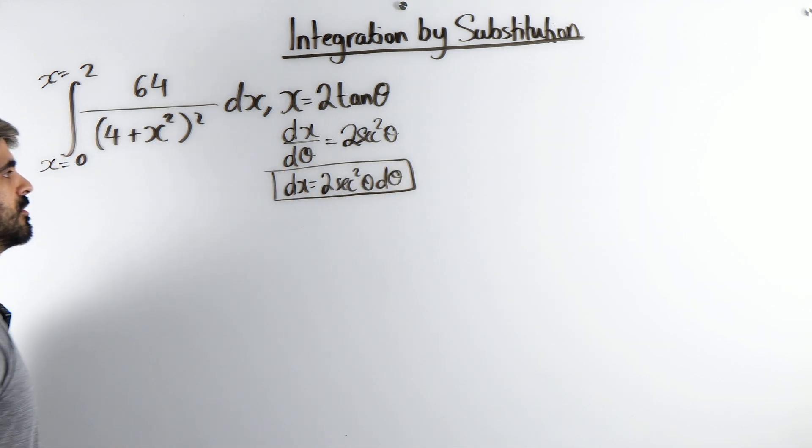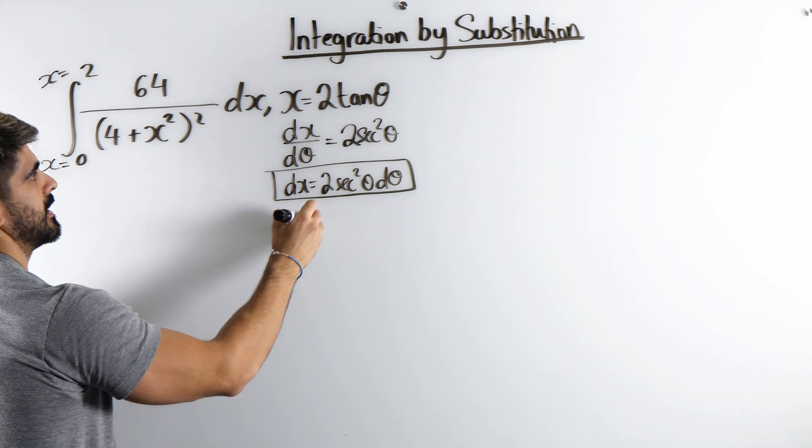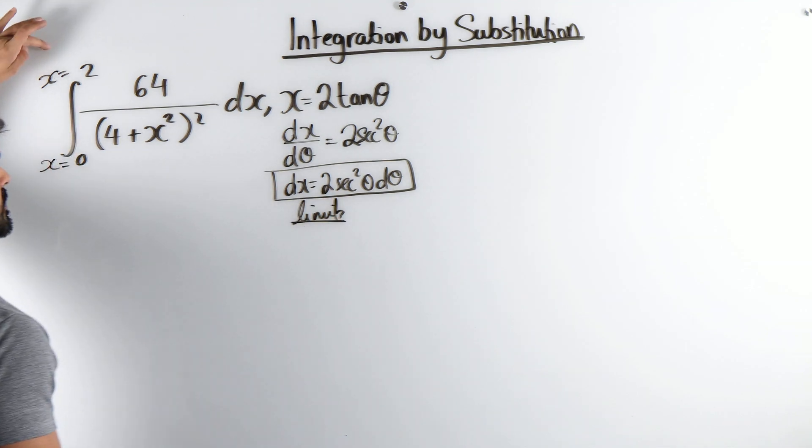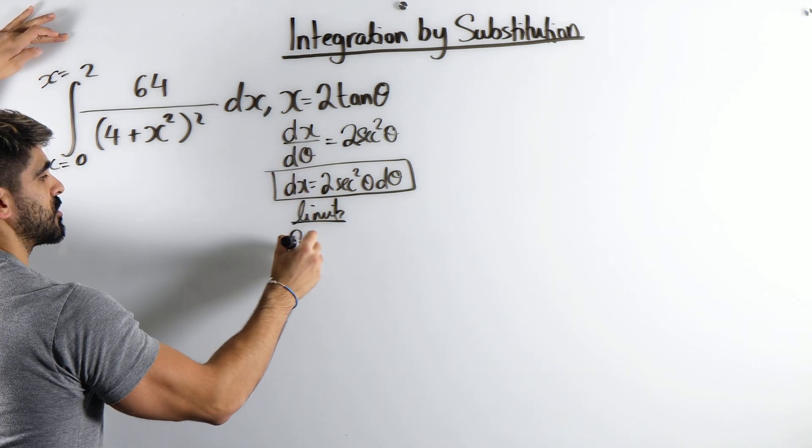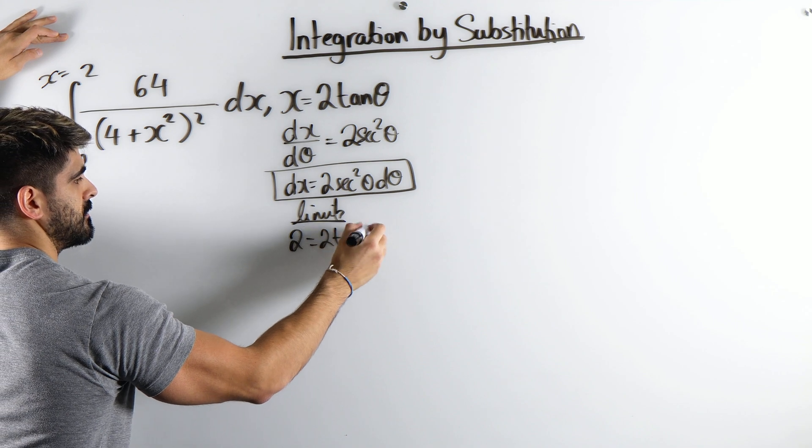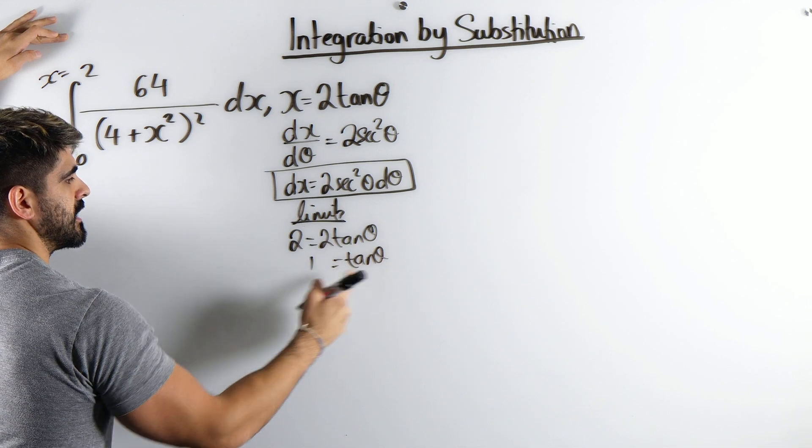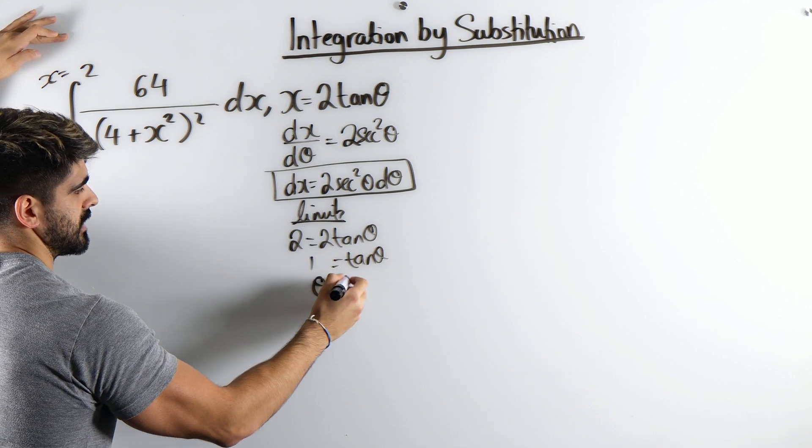The next thing we do is the limits. So my limits, when x is 2, you get 2 is 2 tan theta. Tan theta is 1. Inverse tan of 1 is pi over 4.